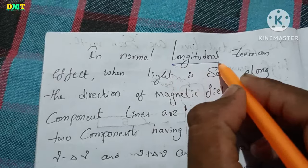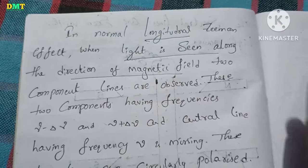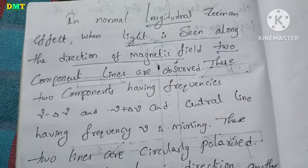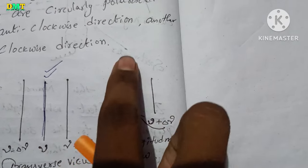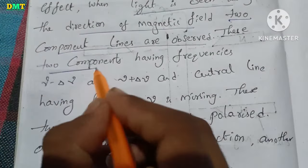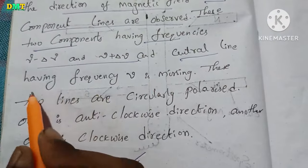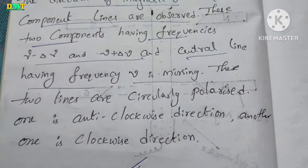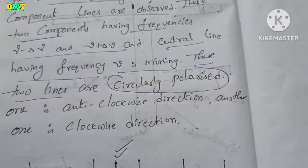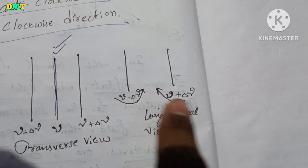Normal longitudinal Zeeman Effect: when light is along the direction of the magnetic field, two component lines are observed. These two components have shifted frequencies, and the central line having frequency mu is missing. These two lines are circularly polarized — one in the anticlockwise direction and the other in the clockwise direction.